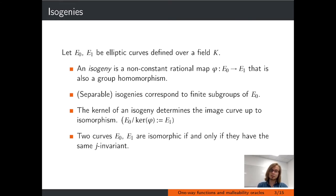Since for every isogeny there exists a dual isogeny in the opposite direction of the same degree, this gives rise to an undirected L-isogeny graph, where the vertices are J-invariants of elliptic curves and two vertices have an edge between them if and only if there exists an isogeny of degree L between those curves.